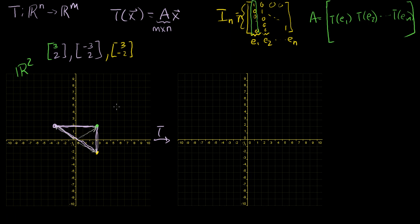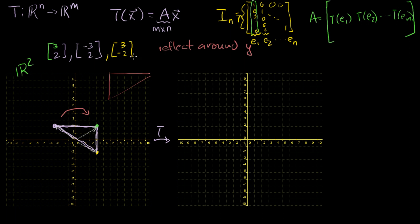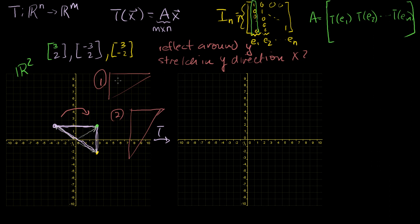Let's actually design a transformation here. Let's say we want to reflect around the y-axis. So we essentially want to flip it over that way — something that'll look like this when we flip it over. And then let's say we want to stretch in the y direction times 2. So we're going to first flip it, and then stretch it. Instead of looking like this, it'll be twice as tall without stretching in x.